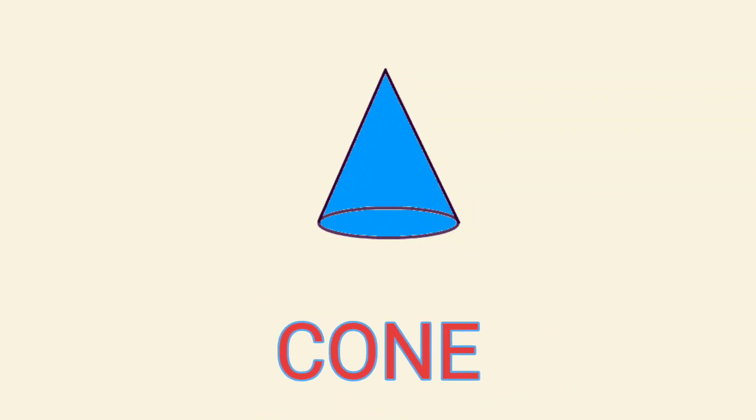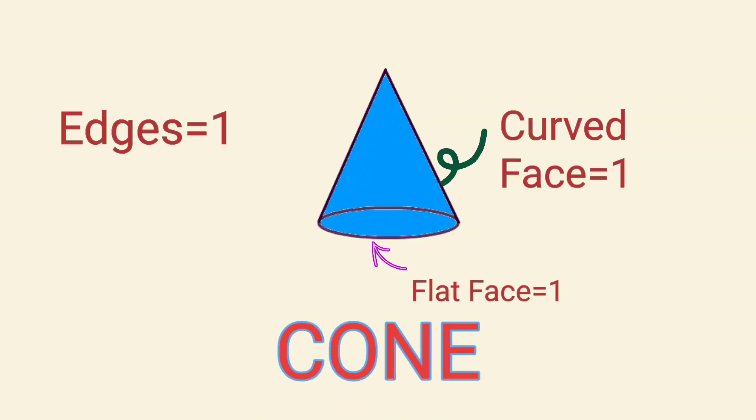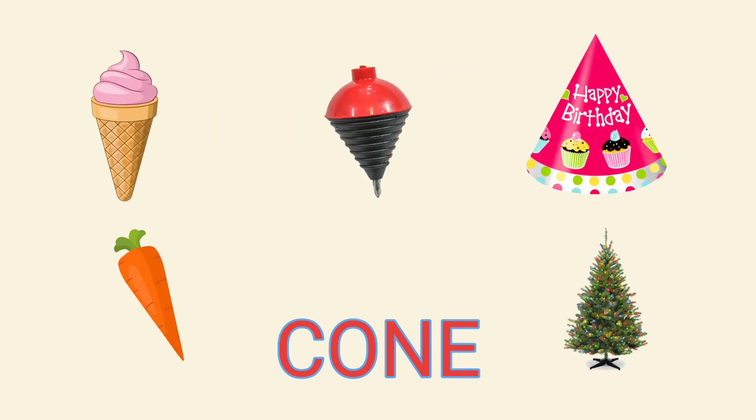More sphere examples include balls and lollipops. Cone: A cone has one flat face, one curved face, one edge, and one vertex. Examples include ice cream cones and spinning tops.